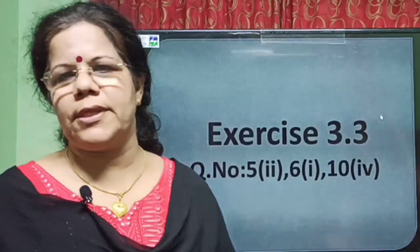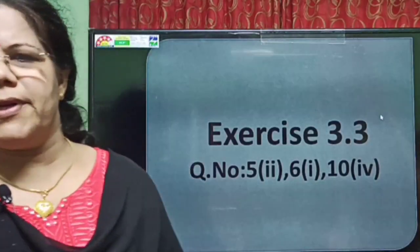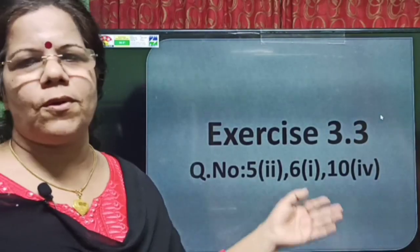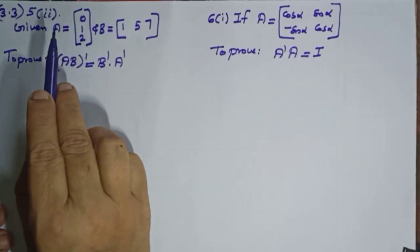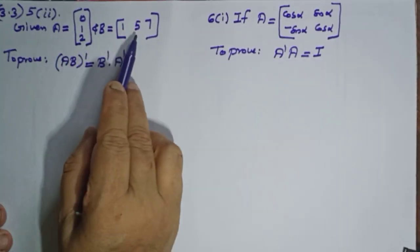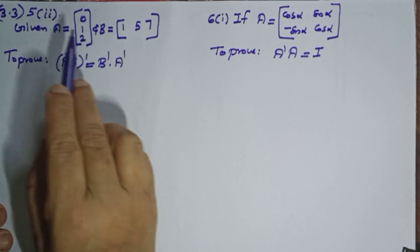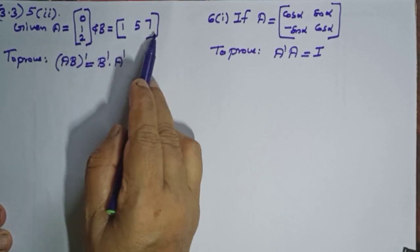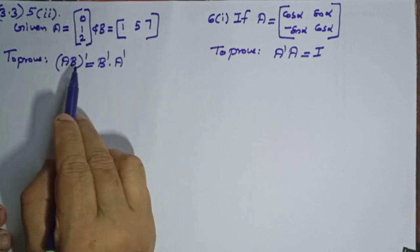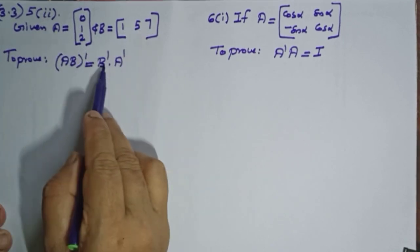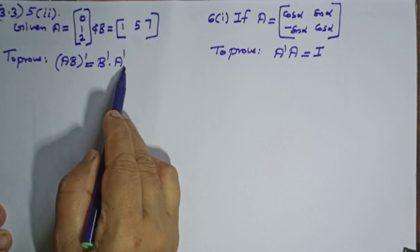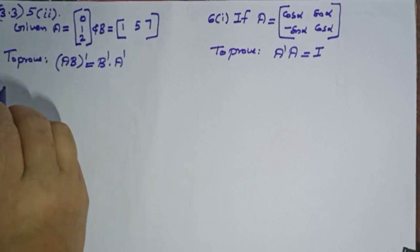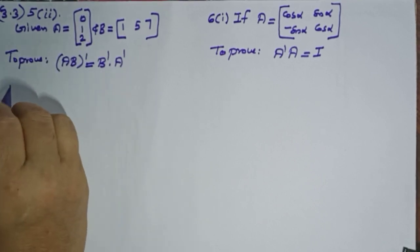Next is Exercise 3.3. We will discuss some problems and solve some important questions. In this question, two matrices A and B are given — A is a column matrix and B is a row matrix — and we are asked to verify AB whole dash equals B-dash into A-dash. First we calculate AB.